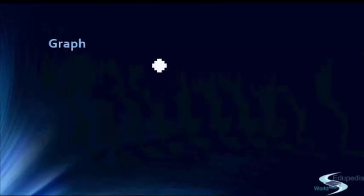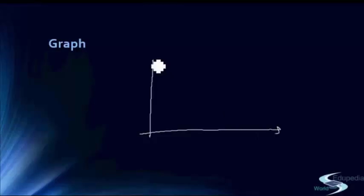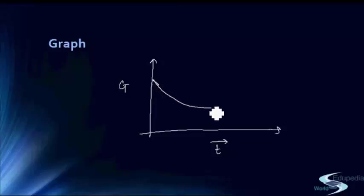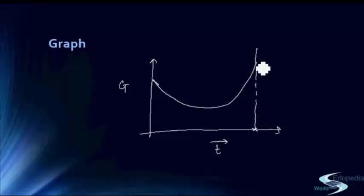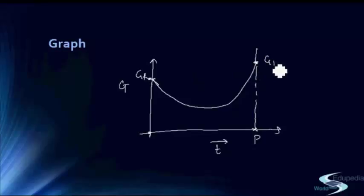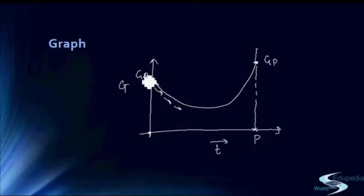Consider the graph of G — Gibbs free energy — with the progress of reaction over time. The graph shows Gibbs free energy decreasing as the reaction proceeds. This point represents Gibbs free energy of reactants, and this point represents Gibbs free energy of products. Gibbs free energy decreases whether you go from reactants to products or from products to reactants.